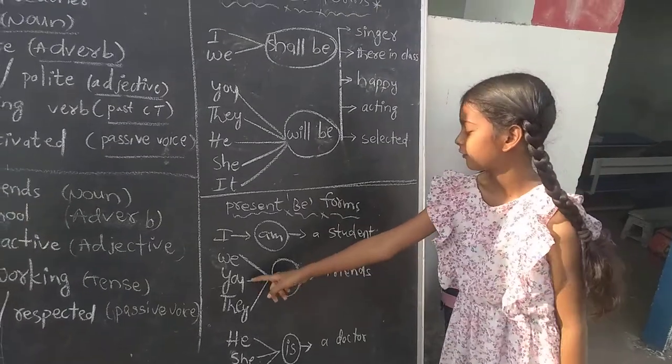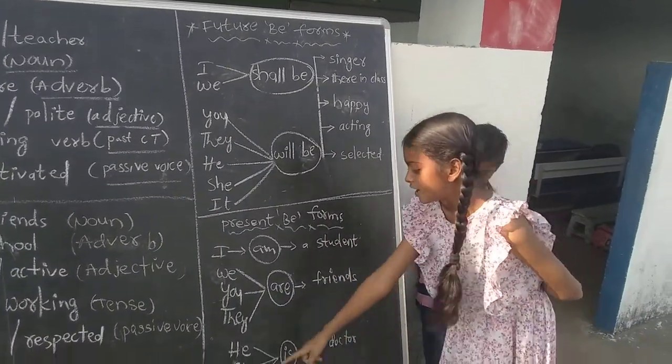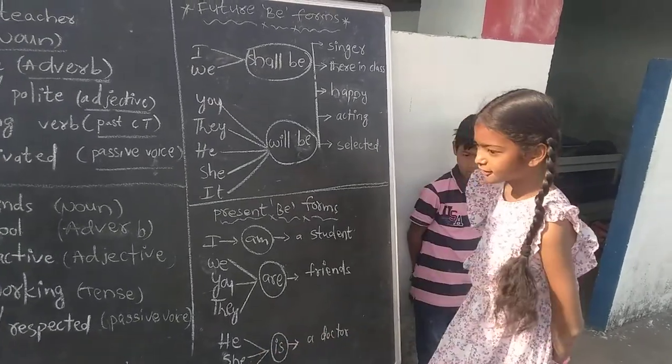I am a student. We are your friends. You are your friends. They are your friends. He is a doctor. She is a doctor. It is a doctor.